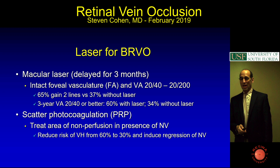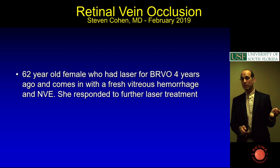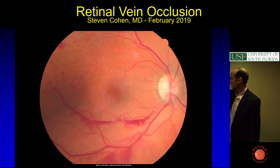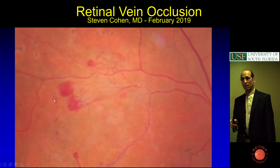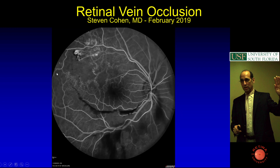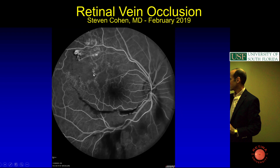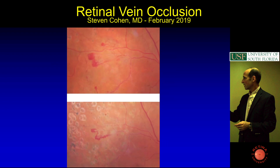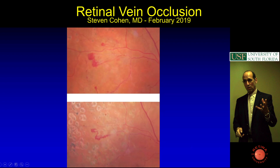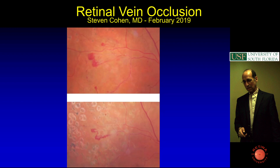For scattered PRP, you treat the area of the neovascularization. Here's a 62-year-old patient who had a vein occlusion years ago and presented with a vitreous hemorrhage. She has a boat-shaped hemorrhage, ischemia superotemporally, and an area of neovascularization. In a branch vein occlusion, you can map your laser with the fluorescein—look for the non-perfusion and treat it. She had prior laser in the periphery but it wasn't adequate, so I lasered her more. Neovascularization won't disappear, but it'll shrink and become less likely to bleed.